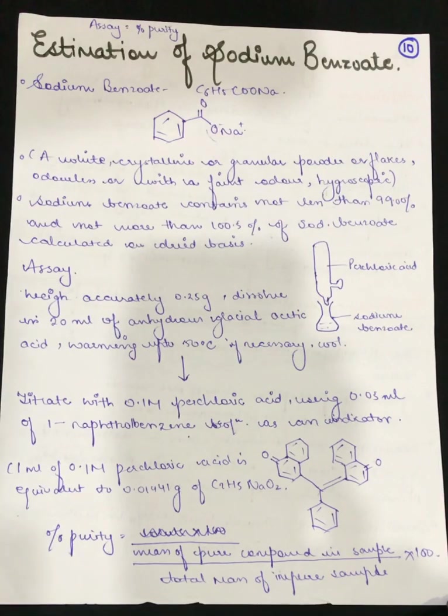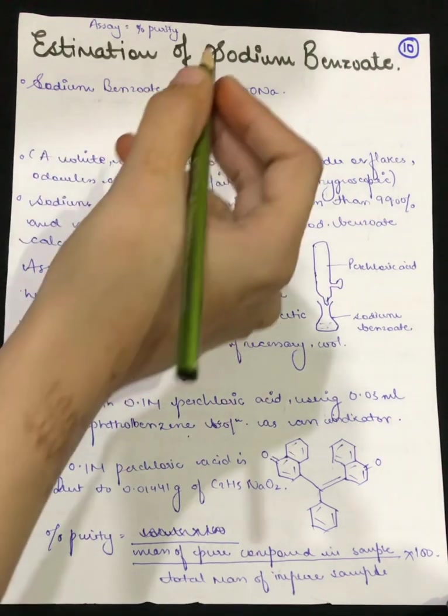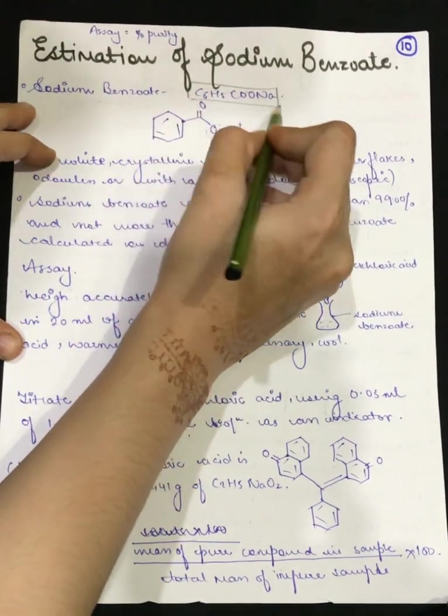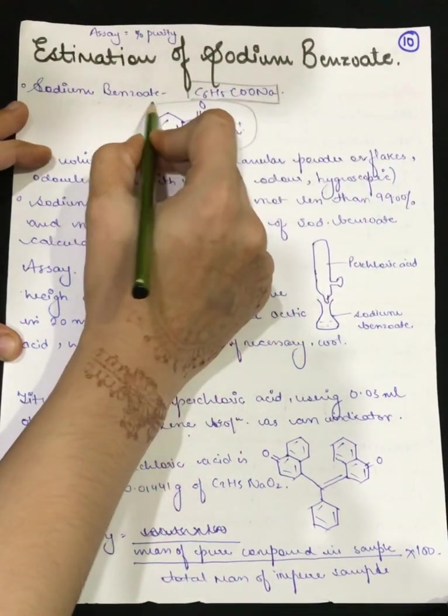Hey everyone, in this video we are going to study about estimation of sodium benzoate and ephedrine hydrochloric acid. First of all, let's begin with sodium benzoate. When we talk about estimation, we will prepare the solution and then calculate its percentage purity. The structure of sodium benzoate has this chemical formula and structure.